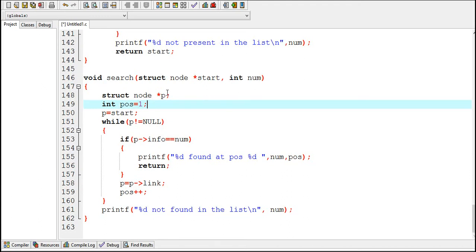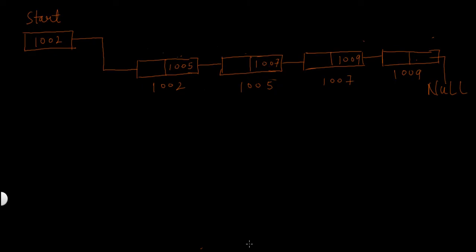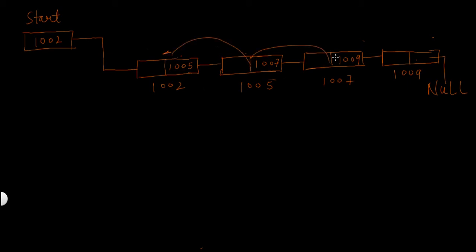In the previous video I created a search function, and in this video I will create a count function to count the number of nodes present in the linked list. The count function will print the number of nodes present. For example, in this linked list there are 4 nodes, and counting will begin from the first node till the last node.